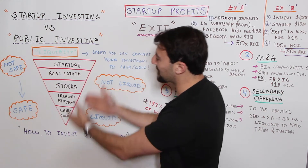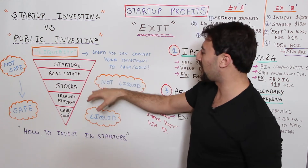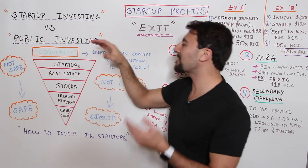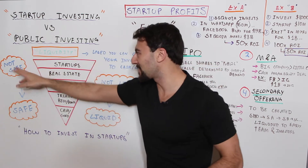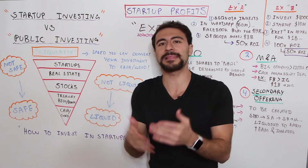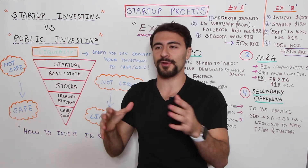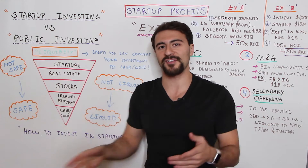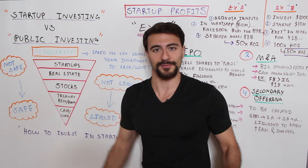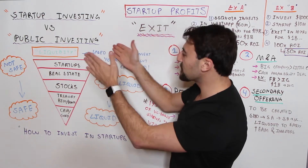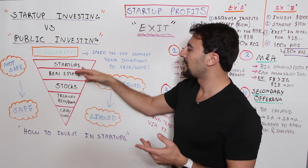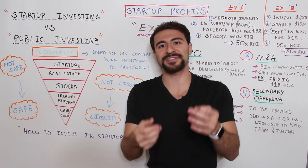If I have this upside-down pyramid here — in order from not liquid at the top down to highly liquid at the bottom — at the top we have startups. These are the least safe and very illiquid, meaning you can't convert your shares of stock in a private company into cash or gold or anything else. You're pretty much stuck. As we move down this pyramid, you have real estate, which is more liquid than startups but less liquid than stocks.